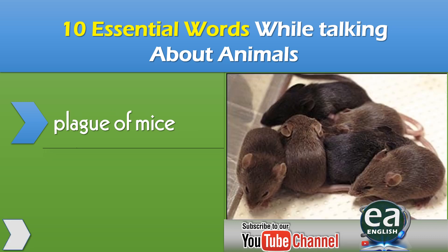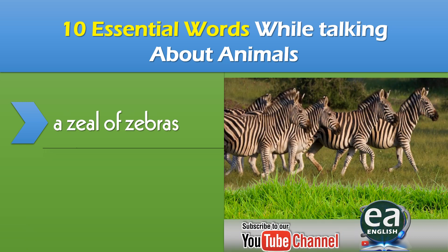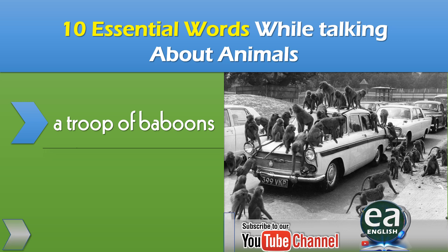Don't forget the plague of mice. A group of zebras is called a zeal of zebras. A group of baboons is called a troop of baboons — and remember, a group of monkeys is also called a congress.